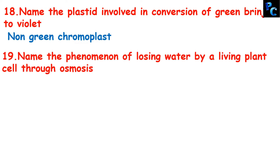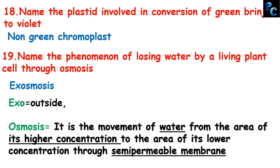Name the phenomenon of losing water by living plant cells through osmosis, that is when water is going out. It is called exosmosis. Exo means outside, and osmosis is the movement of water from an area of higher concentration to an area of lower concentration through a semi-permeable membrane. Within the cell a selectively permeable membrane is present and the water goes out through it, so it is called exosmosis.